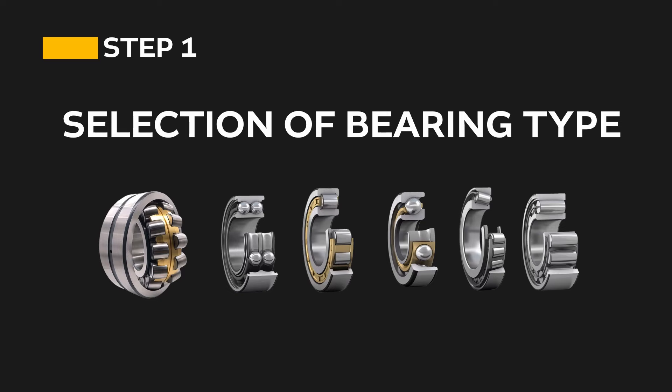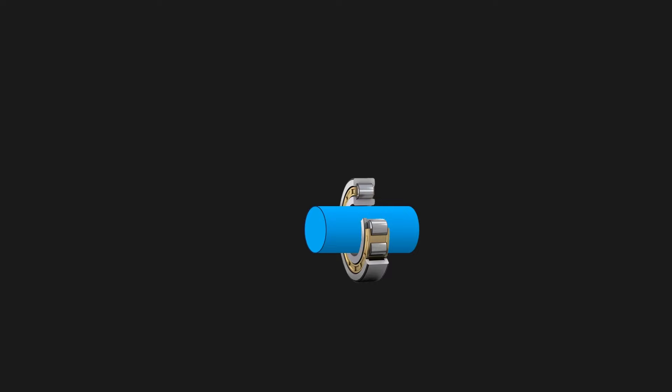So let's start the first step of bearing selection procedure: the selection of suitable bearing type. Selecting a bearing type is all about selecting a more suitable bearing type, because for the same application there can be multiple bearing options. But our aim should be to select a more robust and more economical one as per the application and operating parameters.